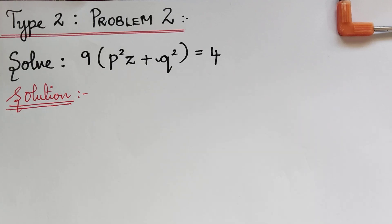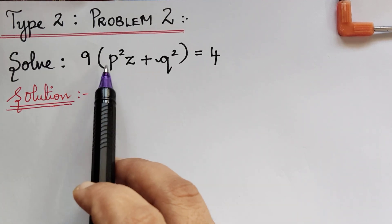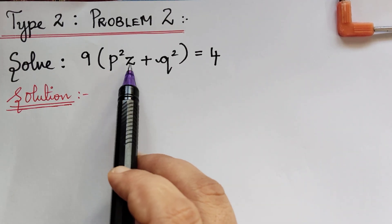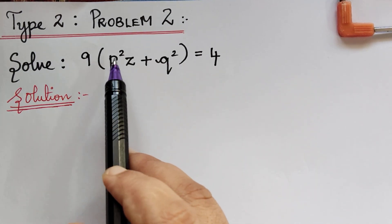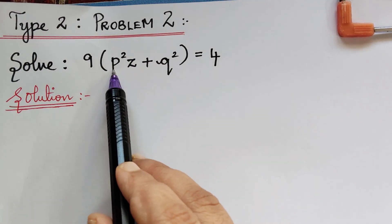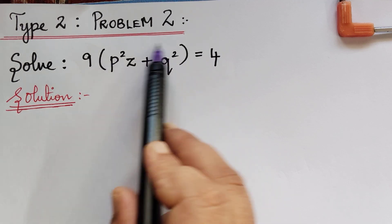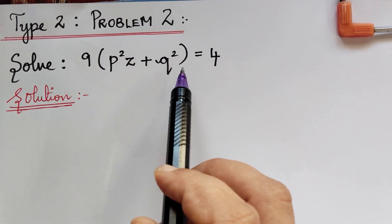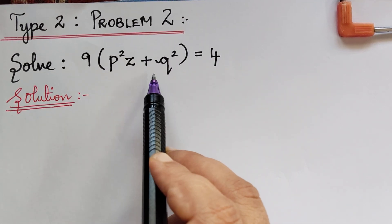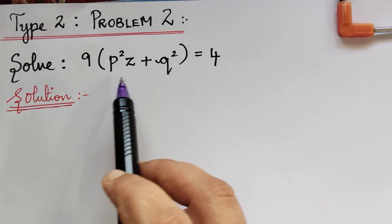Dear students, here we have problem 2 under the topic standard type 2 from nonlinear partial differential equations. The question is: solve 9 multiplied with p squared times z plus q squared equals 4. We understand that only p, q, and z are involved in this equation, so this is of the standard type f(z, p, q) = 0.